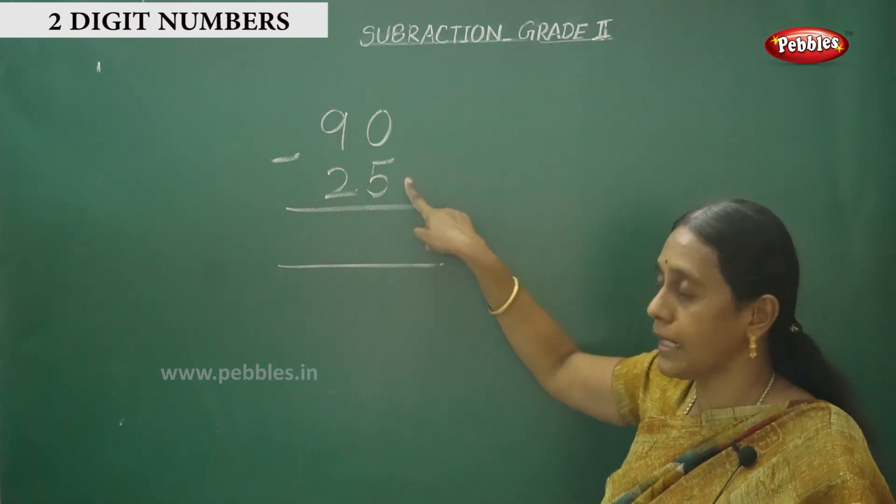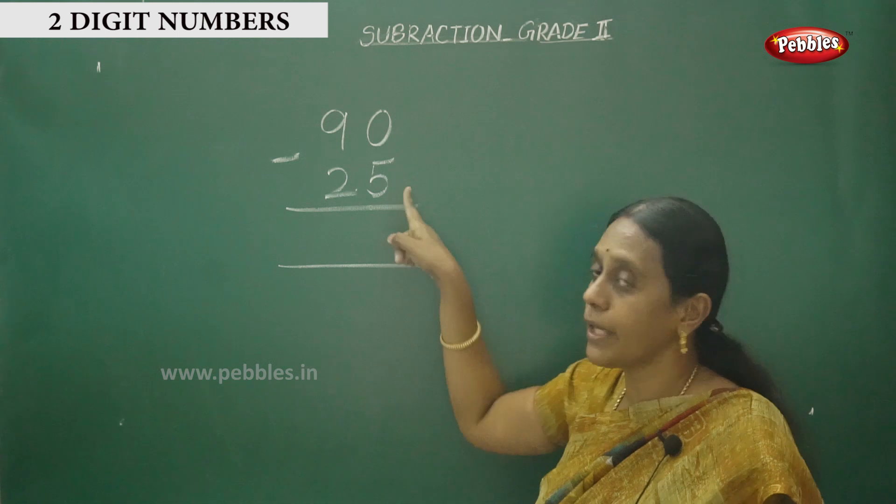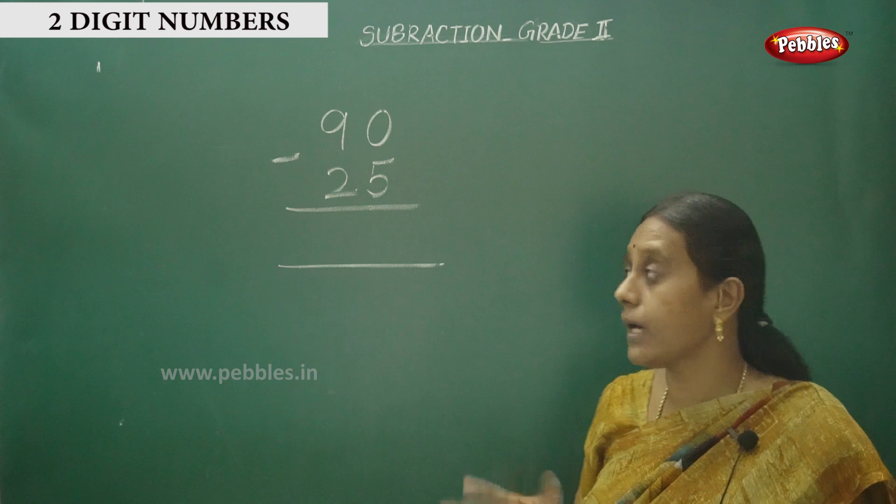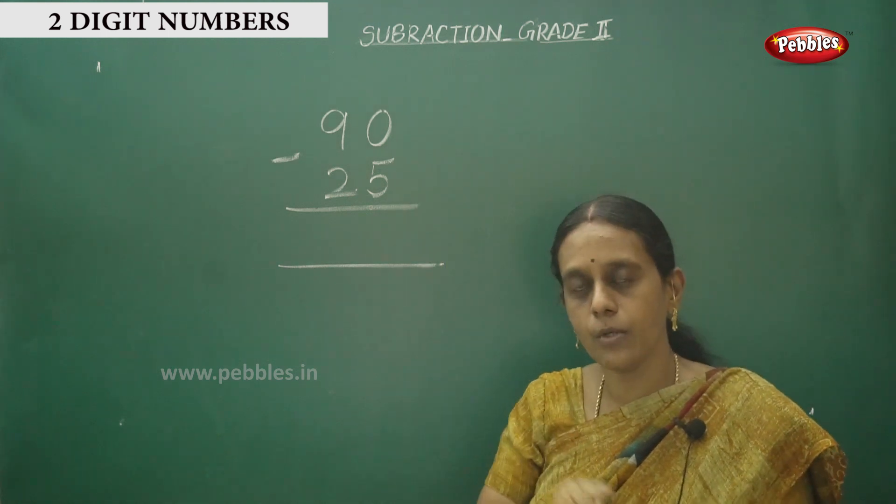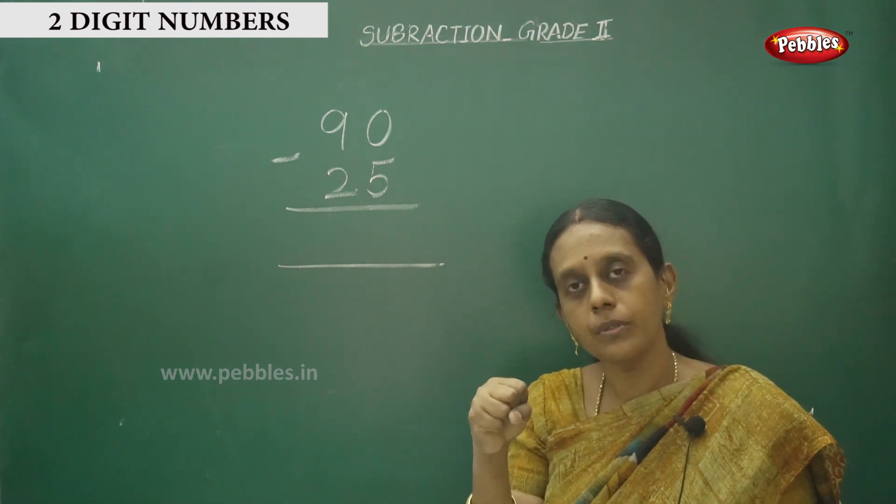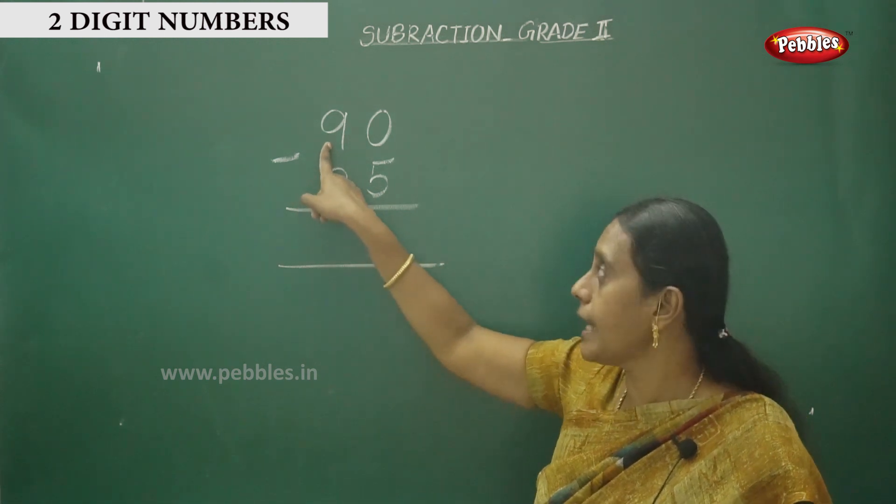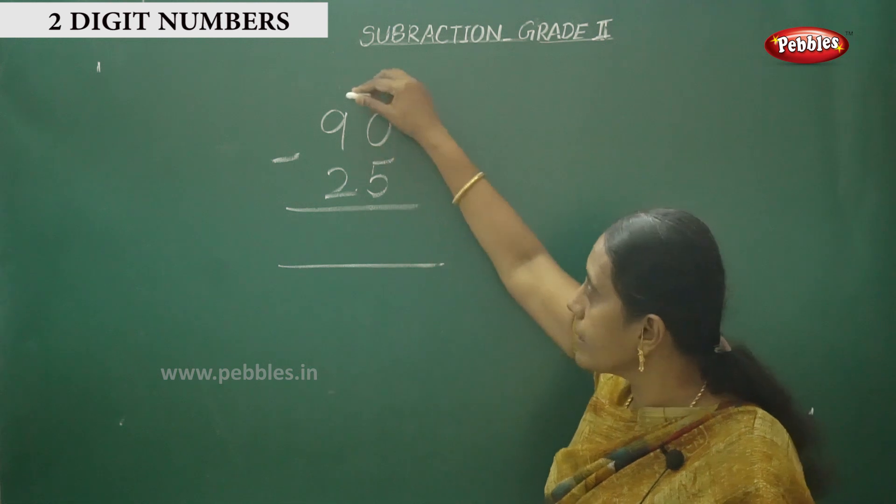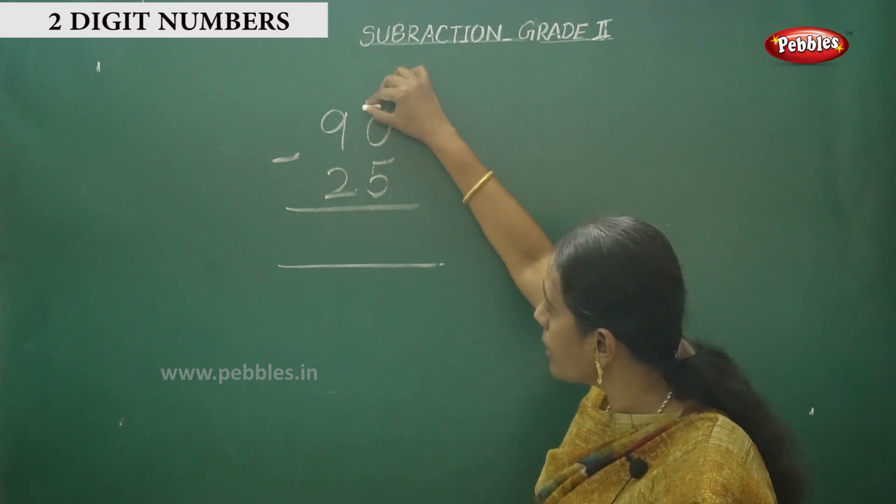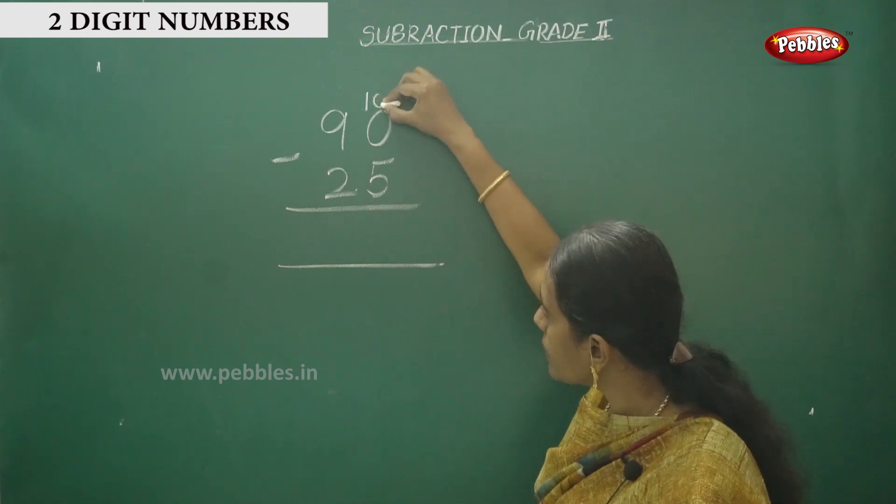First, the top ones place number is smaller and this is bigger. You can't subtract 5 from this 0. This is the neighboring number, that is 9. So you have to borrow one number here. So 9 will give one number to the 0, so this is the borrowing number, and this 0 will become 10.